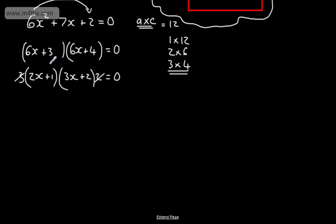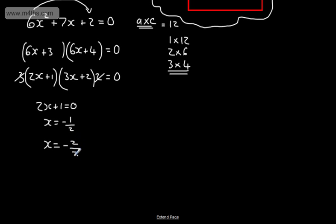From the last video, one or both of these factors have to equal zero. If 2X plus 1 is equal to 0, subtracting 1 and dividing by 2, X would be equal to negative one half. If 3X plus 2 is equal to 0, X would be equal to negative 2 over 3. It's simply this number divided by that one with the sign changed, so it's minus 2 thirds. That is factoring and solving a quadratic equation when the coefficient of the term in X squared, or the A term, is not 1.